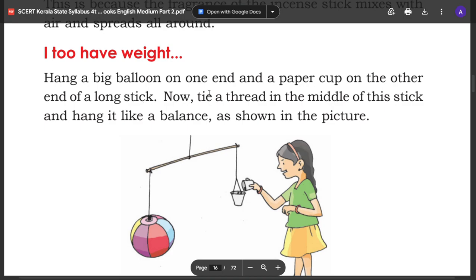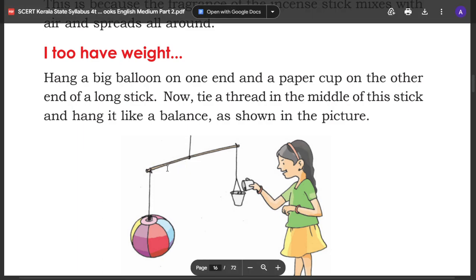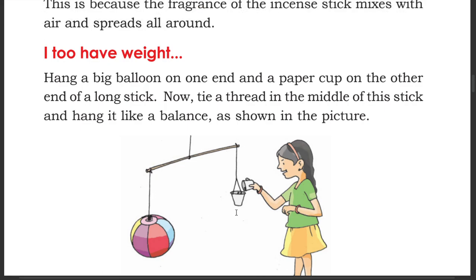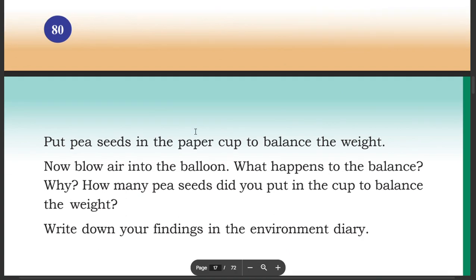Hang a big balloon on one end and a paper cup on the other end of a long stick. Now tie a thread in the middle of this stick and hang it like a balance. Put pea seeds in the paper cup to balance the weight.